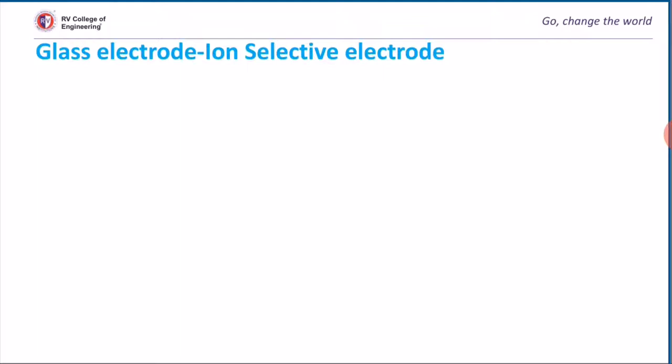Ion selective electrodes are those electrodes that respond to particular ions by neglecting other ions in a solution. These electrodes consist of a membrane which is highly selective toward only one type of ion present in solution. The selection of membrane plays a very important role. In fact, the heart and soul of the ion selective electrode is the membrane.